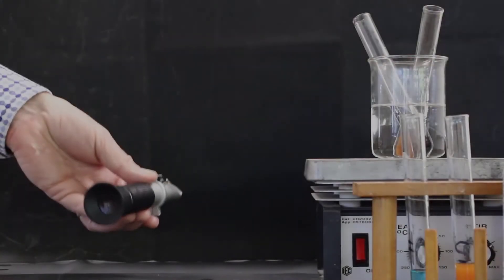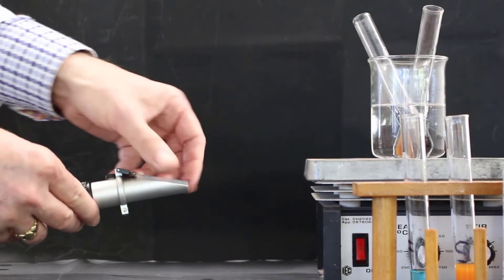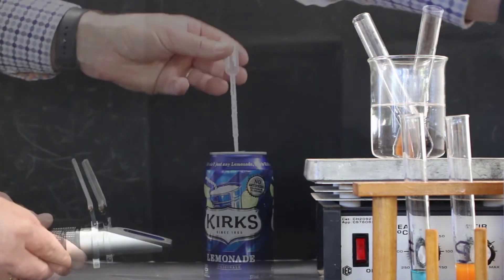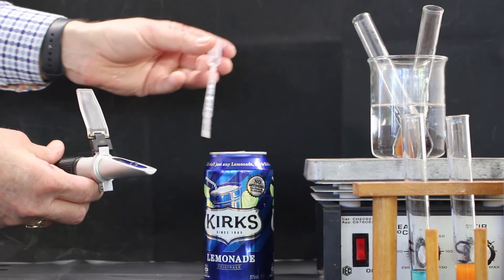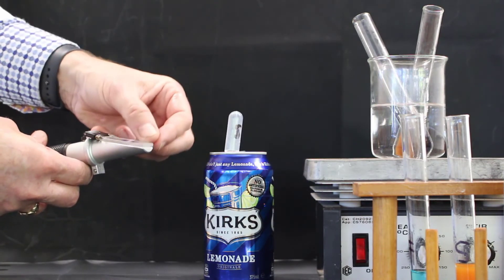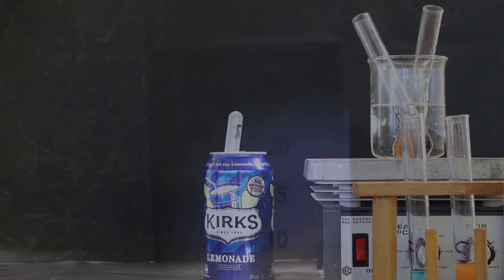However, there is another test we can do as well. This device is a refractometer. We put a few drops of the liquid on the screen and then look through the instrument into the light. You can see there is a line indicating the presence of sugar because the sugar refracts the light.